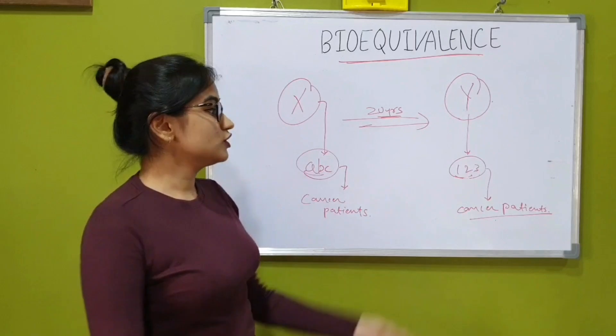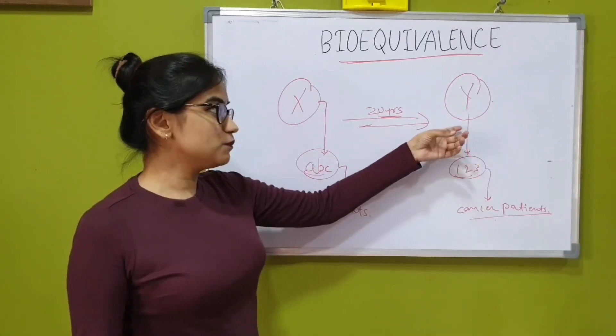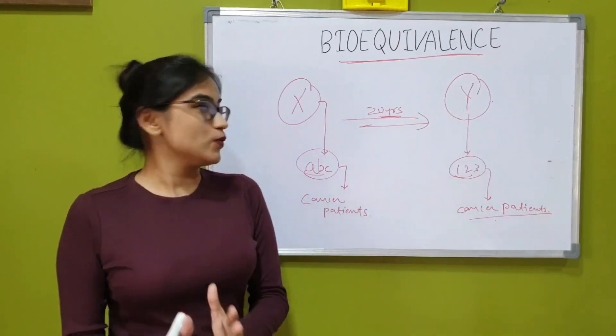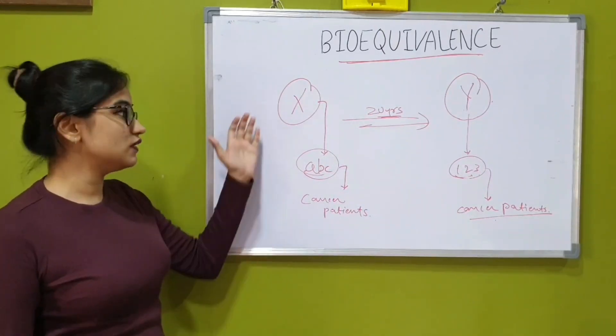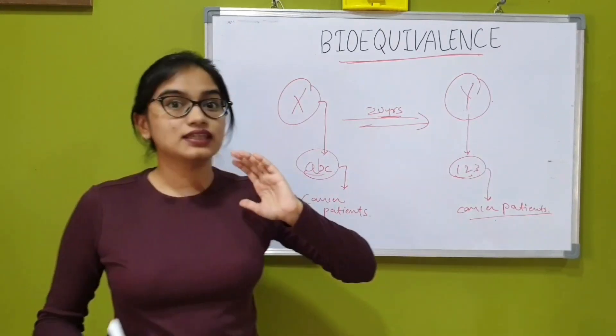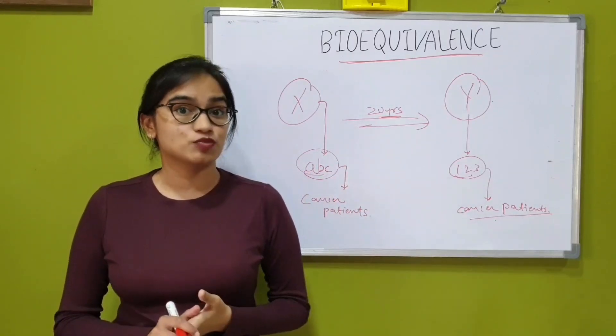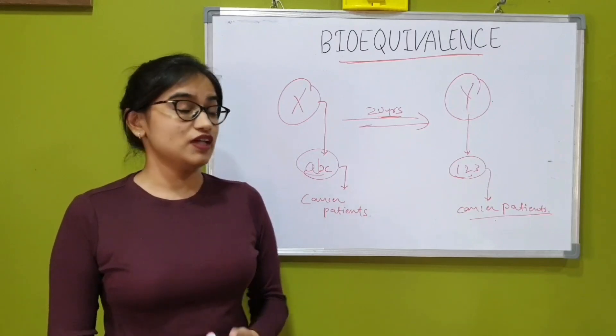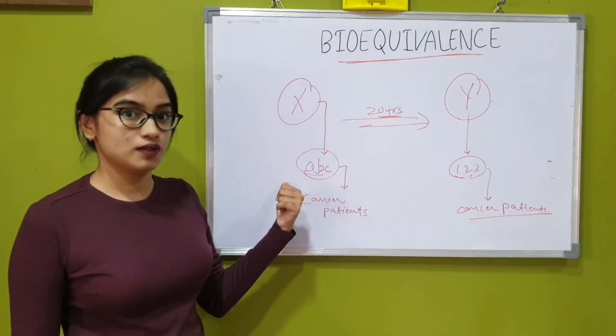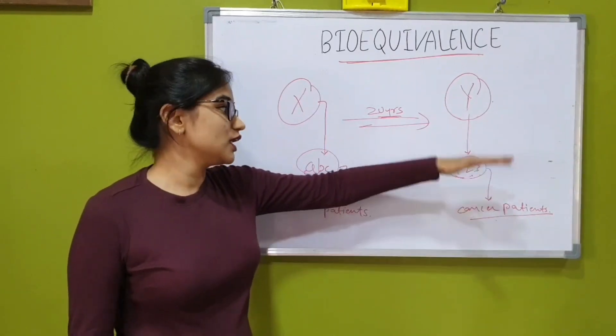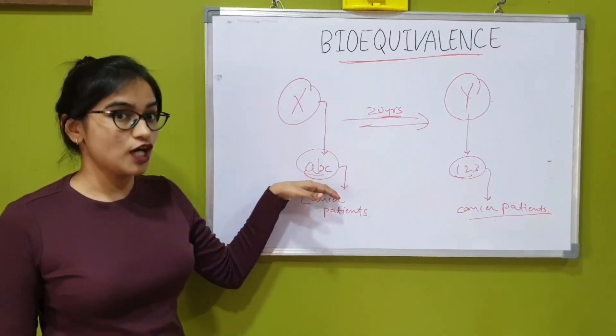In order for the drug 123 developed by the manufacturer Y to be biologically equivalent to the drug ABC developed by the manufacturer X, the rate and extent of bioavailability of this drug in plasma should not be significantly different from this drug. Then only the drug 123 will be considered bioequivalent to the drug ABC.